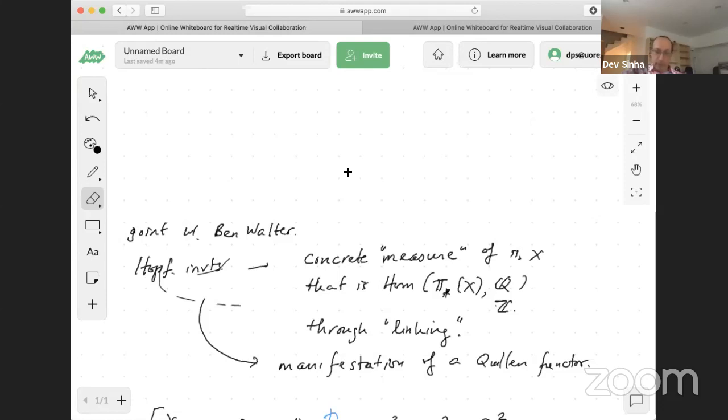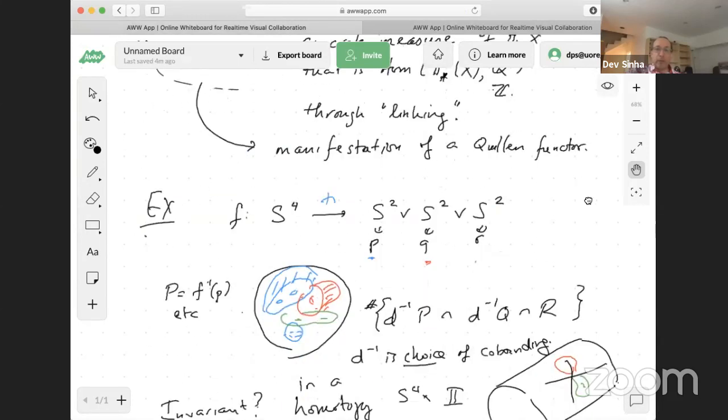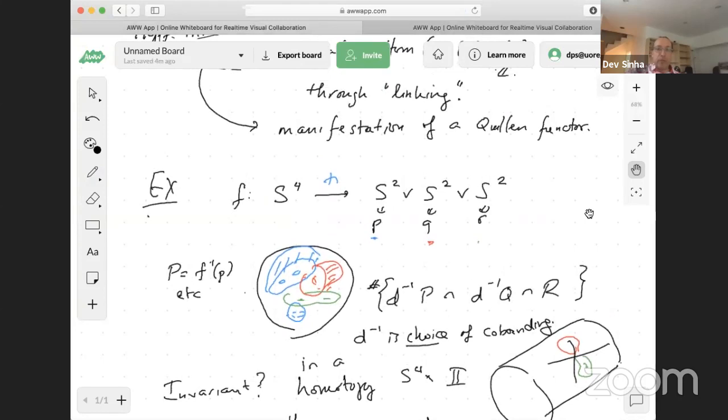But we'll also see that in this case, this geometry of linking is really manifest in a Quillen functor. And at the end of the lecture, we started talking about bar complexes, and we didn't get to the full Quillen functor, that's the quote unquote right one. But that's where we're going. So what's a first example to think about? Suppose we have a map from a four-sphere to a wedge of three two-spheres, and I take a point away from the base point in each wedge factor, let's call those P, Q, and R, and I'm coloring them blue, red, and green.